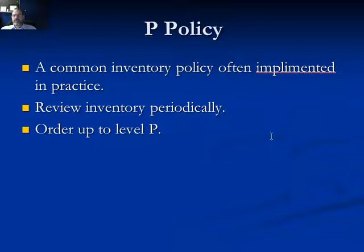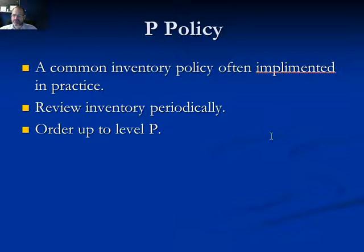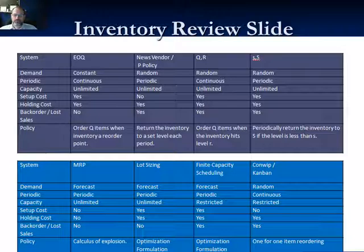Another commonly implemented policy is the P policy based on the news vendor: simply order up to P items when reviewing inventory. For instance, if a truck comes to the store once a day, you might always keep two pallets on hand — ordering a second pallet as soon as you're down to one. Due to transportation considerations, a P policy often makes practical sense. This concludes the introduction to QR and P policies. Don't expect test questions on QR other than knowing what the policy is. Make sure to read through and understand which inventory policy works best in which situation.